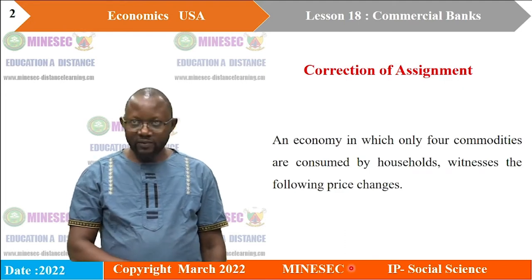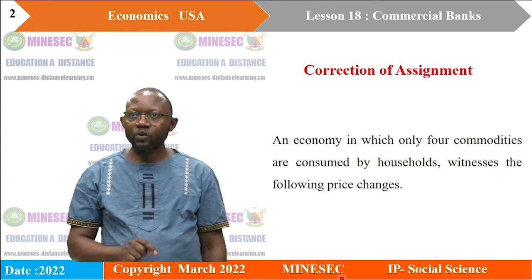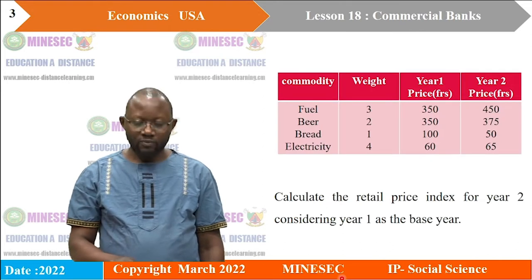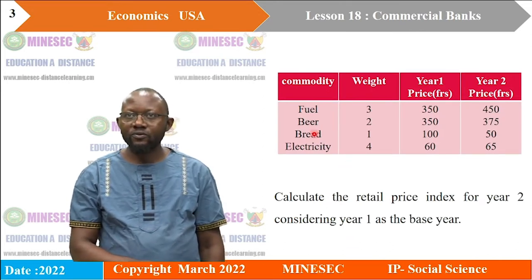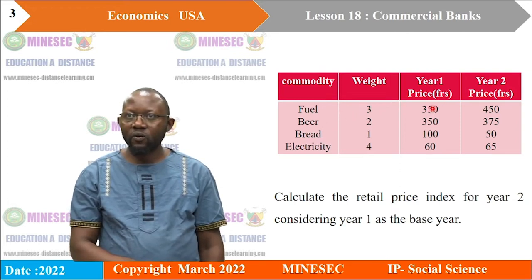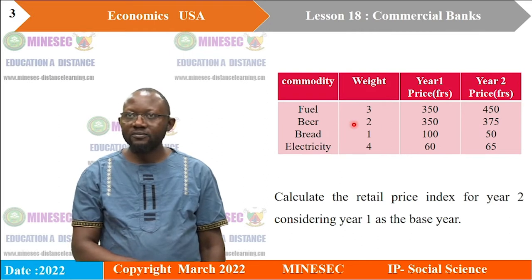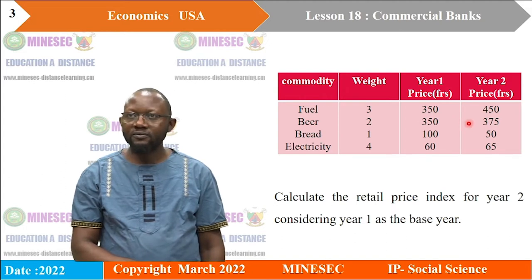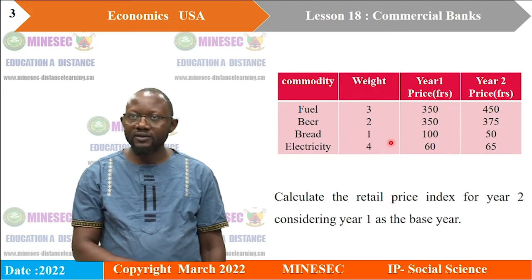This is the assignment we had: an economy in which only four commodities are consumed by households witnesses the following price changes. We have Fuel, with a weight of 3, price in year 1 is 350 and year 2 is 450. Beer, weight 2, price year 1 is 350, year 2 is 375. Bread, weight 1, price year 1 is 100, year 2 is 450.